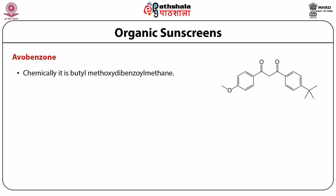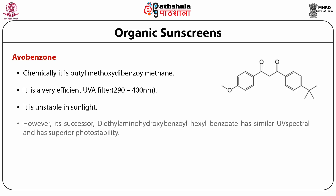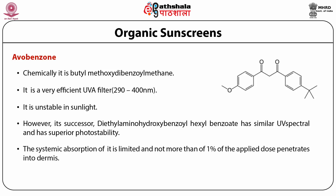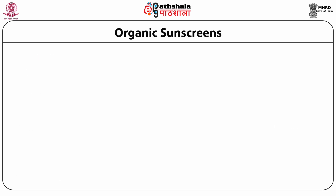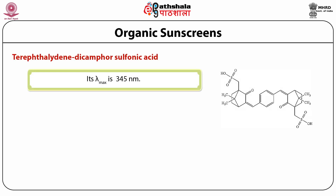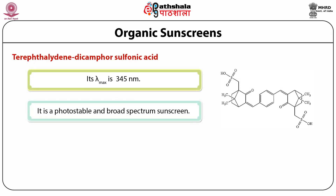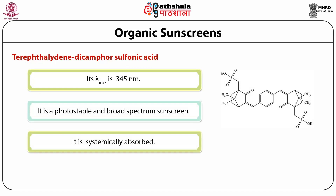Avobenzone, chemically known as butyl-methoxy-dibenzoylmethane, is a very efficient UV filter but is unstable in sunlight. However, its successor, diethylamino-hydroxybenzoyl-hexyl-benzoate, has similar UV spectral properties and superior photostability. The systemic absorption of avobenzone is limited — not more than 1% of the applied dose penetrates into the dermis. Avobenzone can cause photoallergy. The next compound is terephthalylidene dicamphor sulfonic acid, which is a photostable and broad-spectrum sunscreen that is systemically absorbed.